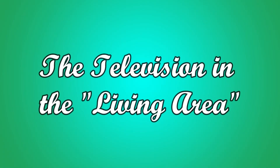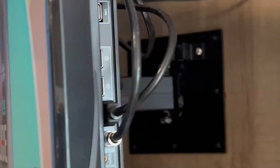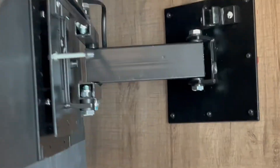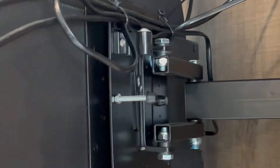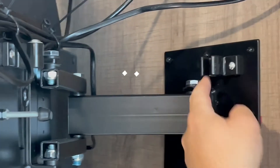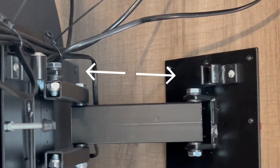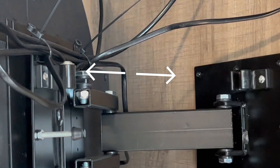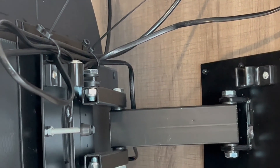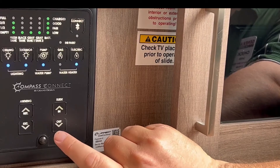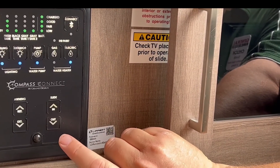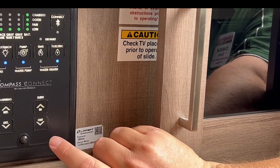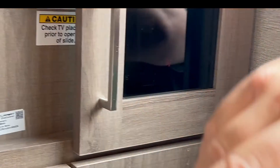If you look behind here, you'll see this rounded piece clips in. So when you're going to travel, you want to make sure you close that back in and clip it back in place so it holds when you're traveling. The biggest thing you're going to want to pay attention to for this slide is making sure that TV is pushed all the way in onto the mount.